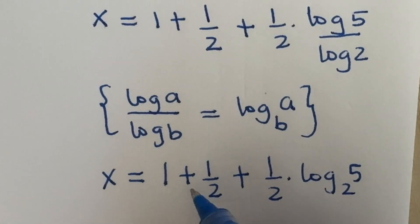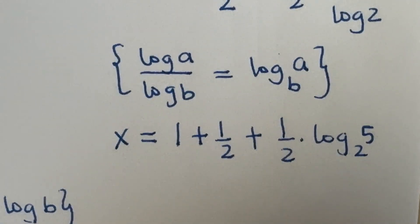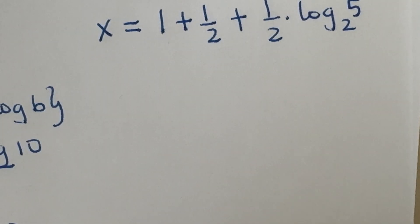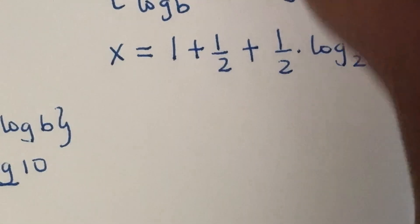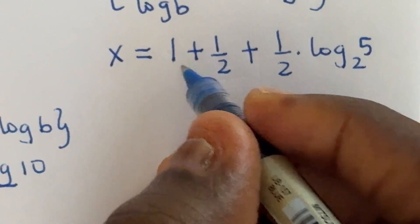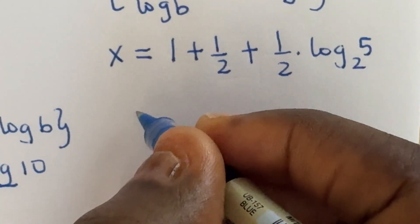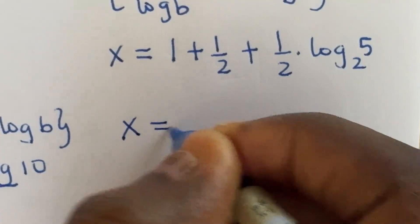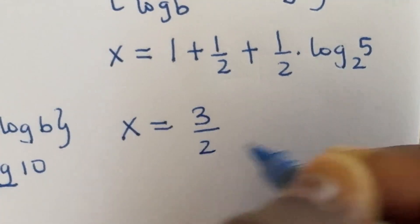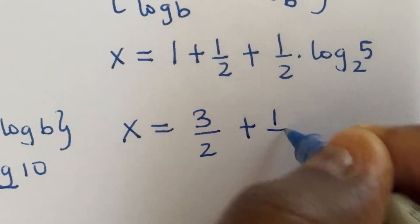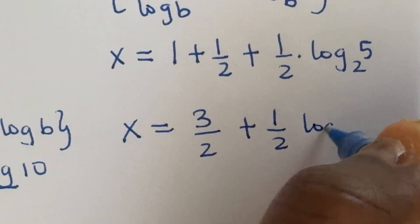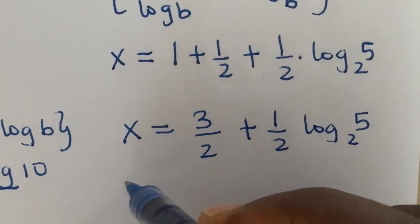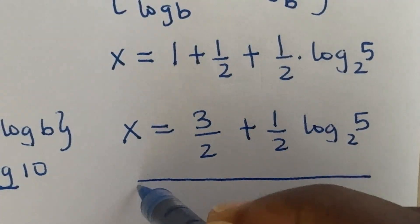Therefore x is equal to 1 plus 1 over 2 plus 1 over 2 times log 5 base 2. If we find the LCM, 1 plus 1 over 2 is 3 over 2, so we have x is equal to 3 over 2 plus 1 over 2 log 5 base 2, which gives us the final answer to this problem.